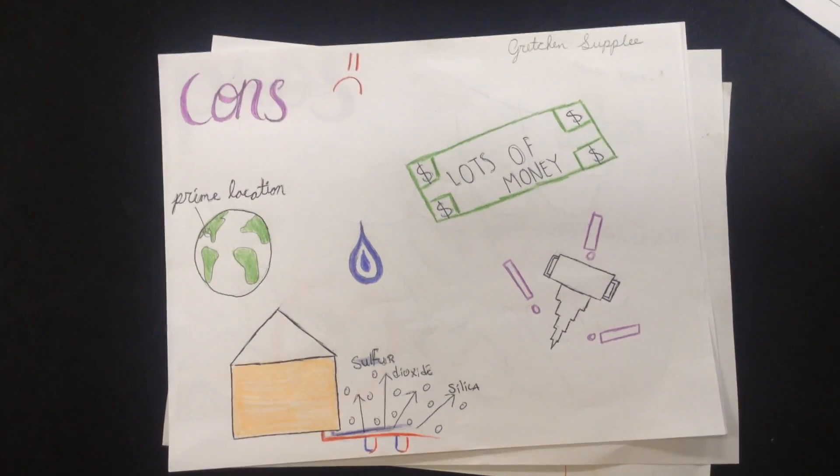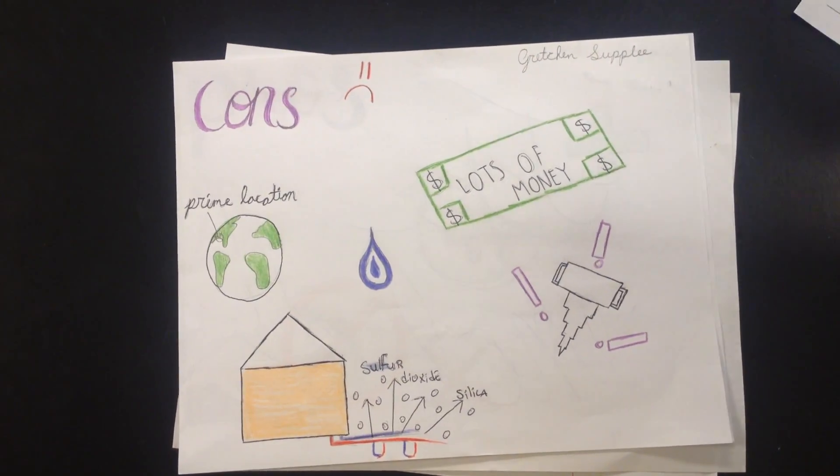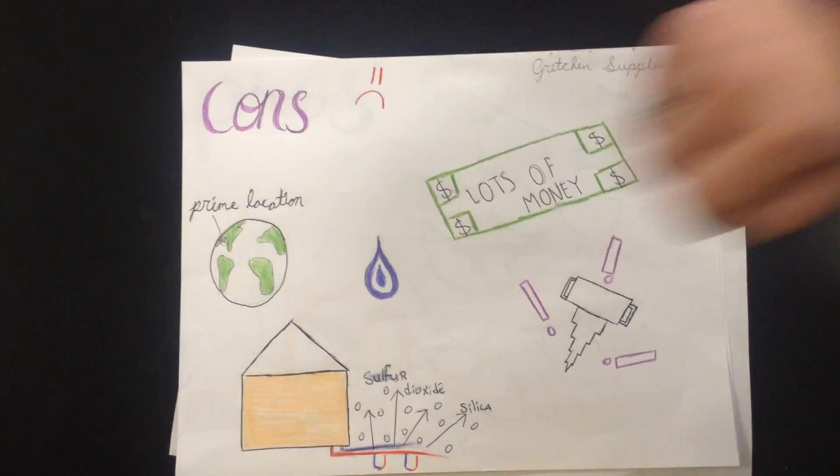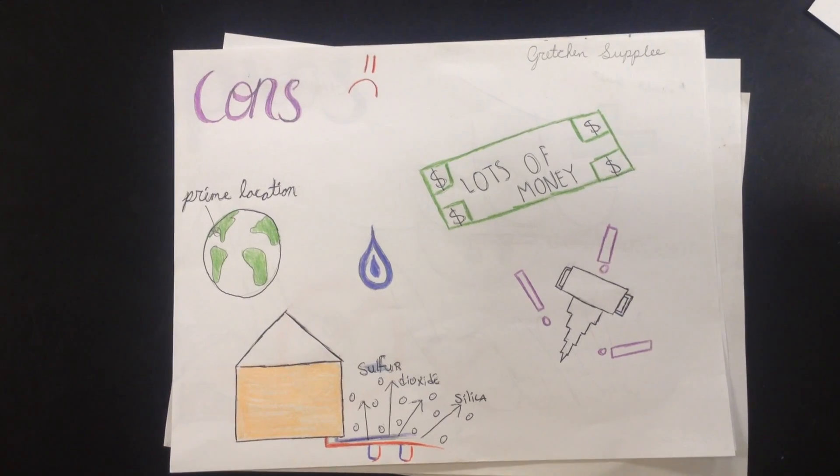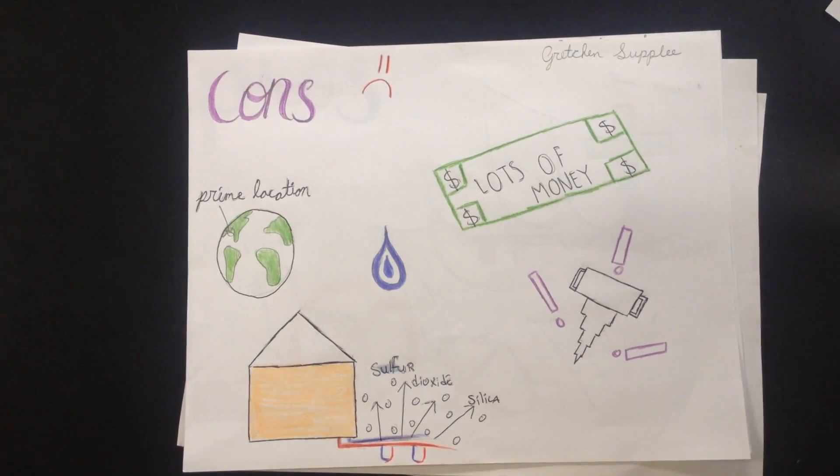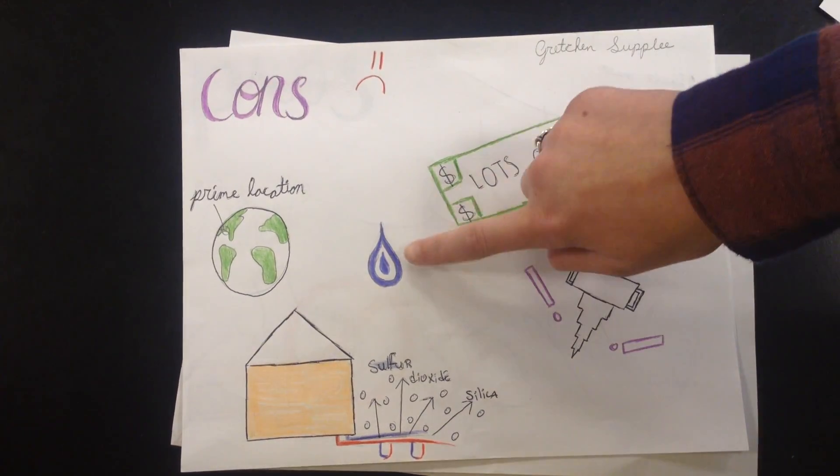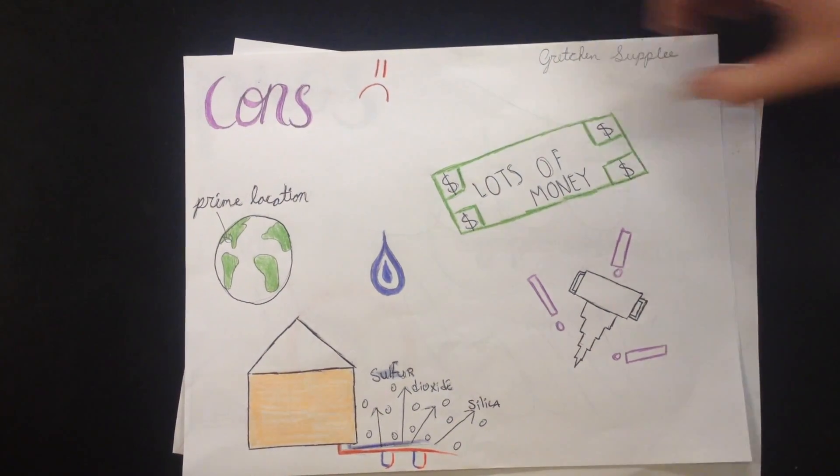While geothermal energy is great, it still has its cons. Geothermal energy is expensive and problematic to drill. It also needs to be in a prime location on earth because not all areas work. And while it's not a significant source of pollution, it still emits sulfur dioxide and silica into the air. As well as that, it uses water, which is frowned upon unless it's absolutely necessary.